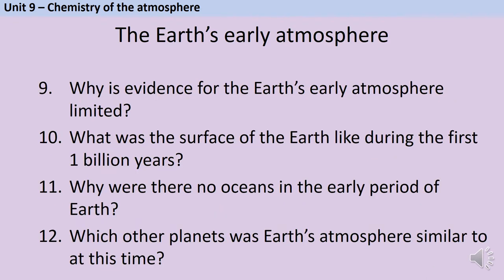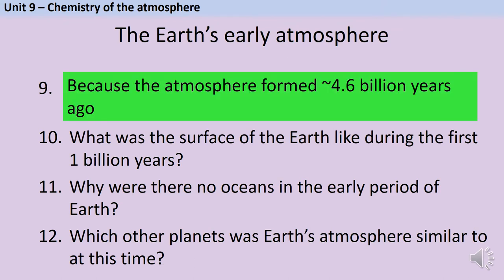Evidence for the Earth's early atmosphere is limited because it formed about 4.6 billion years ago. If you're asked to talk about why we can't be certain what the Earth's atmosphere was originally like, you want to be talking about the lack of proof or the lack of evidence, not just saying there was nobody there to see.